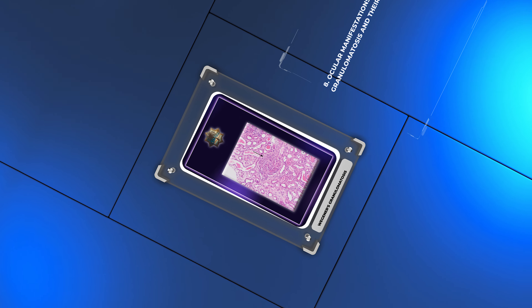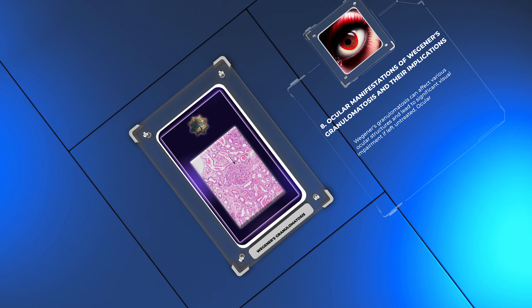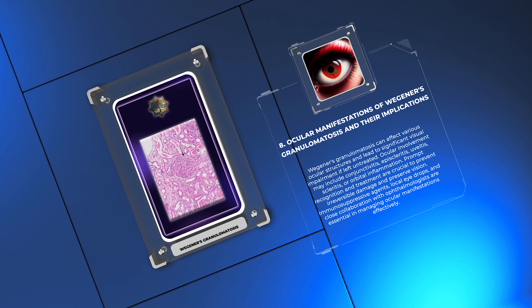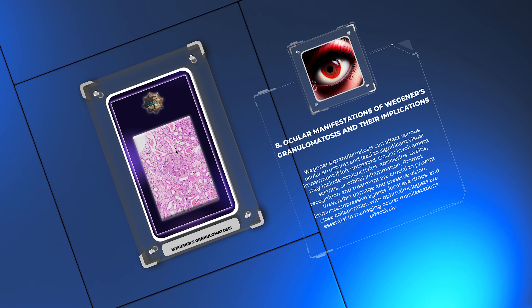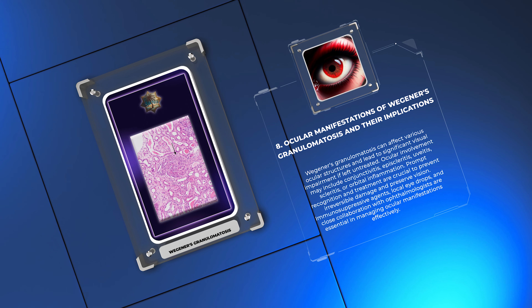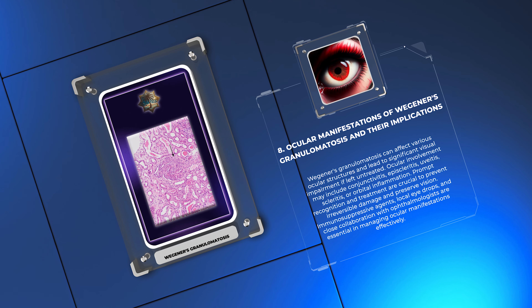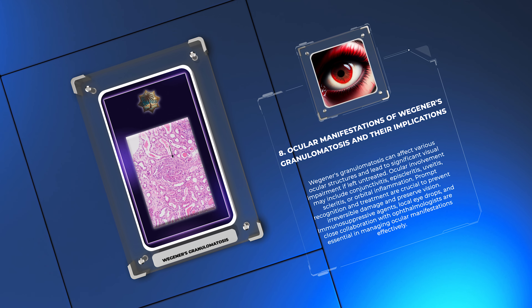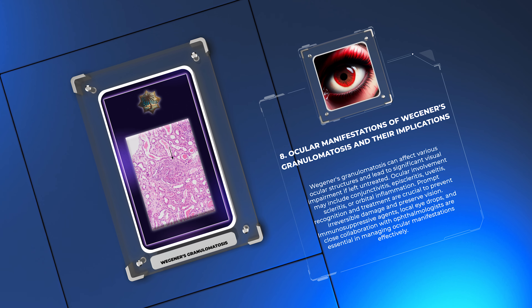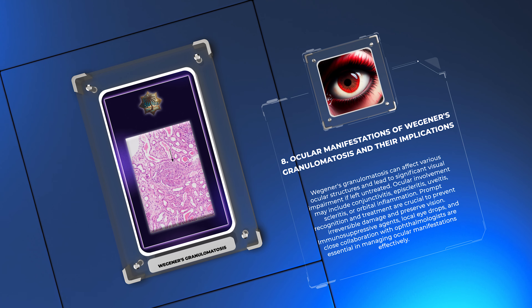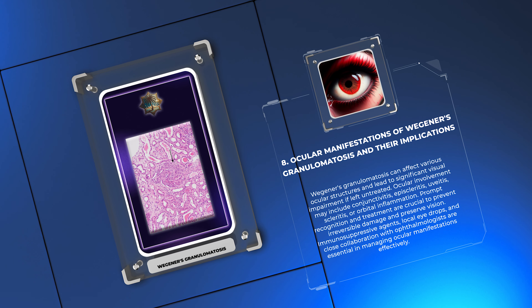Wegner's granulomatosis can affect various ocular structures and lead to significant visual impairment if left untreated. Ocular involvement may include conjunctivitis, episcleritis, uveitis, scleritis, or orbital inflammation.